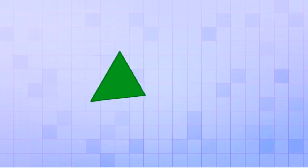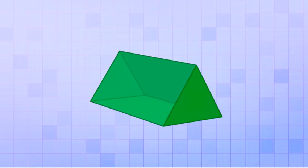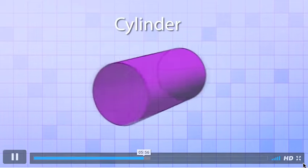If you start with a triangle and then extend it along the third dimension, you get a 3-D shape called a triangular prism. And if you start with a circle and extend it along the third dimension, you get a 3-D shape called a cylinder.